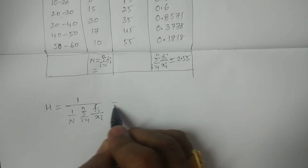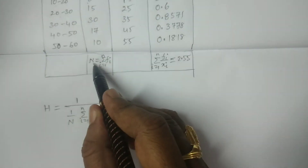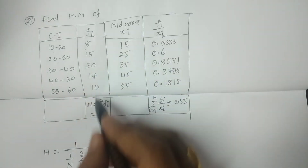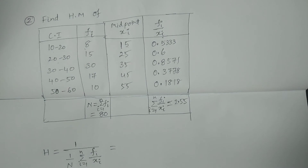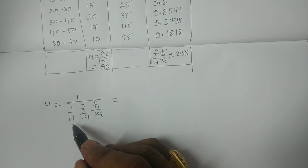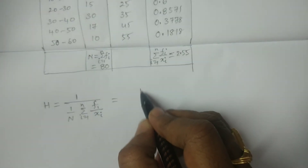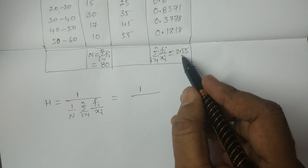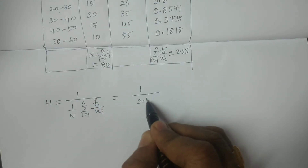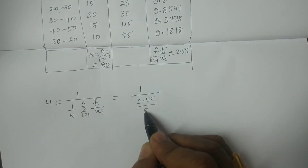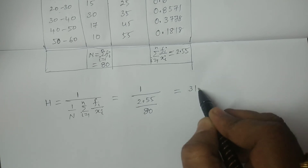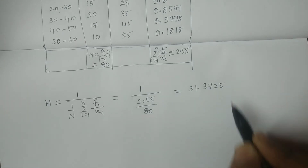We have calculated summation fi/xi = 2.55, and capital N (summation of fi) = 80. Applying the formula: H = 1 / (1/N × Σfi/xi) = 1 / (2.55/80) = 80/2.55. The final answer is H = 31.3725. This is the harmonic mean for the grouped data.